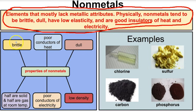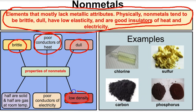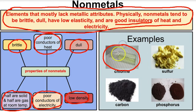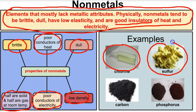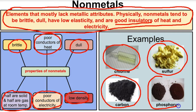Some physical properties of non-metals: they tend to be brittle, they're poor conductors of heat which makes them good insulators, they're dull meaning not shiny, they typically have low densities, they're poor conductors of electricity, and about half of them are solid and half are gas at room temperature. Examples of some non-metals: chlorine gas — that pale yellowish-green gas — sulfur, carbon or soot, and phosphorus.